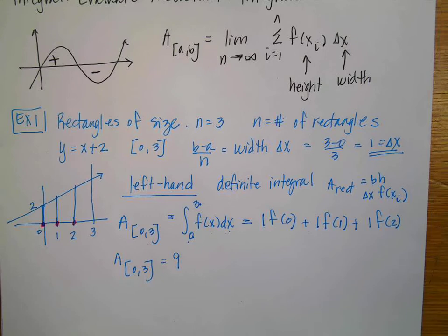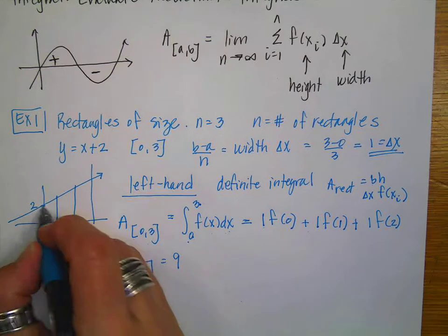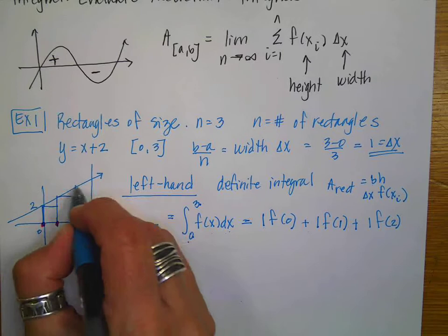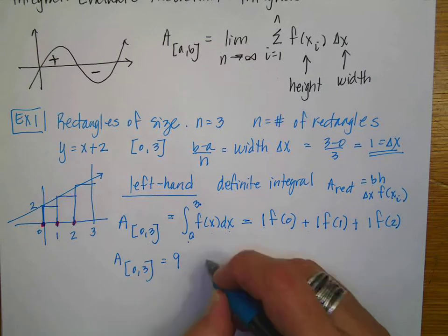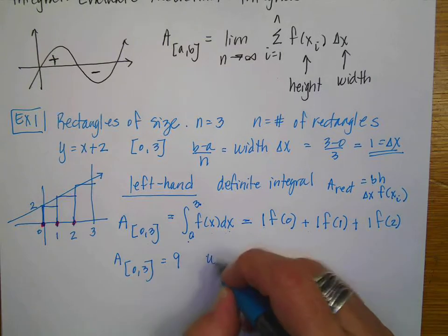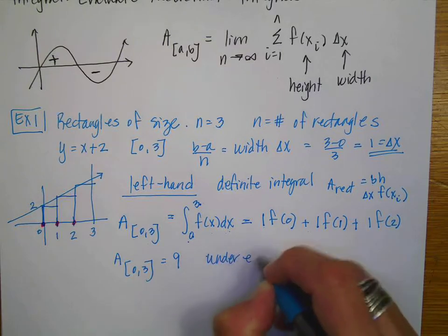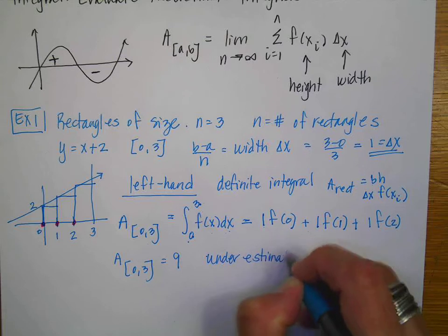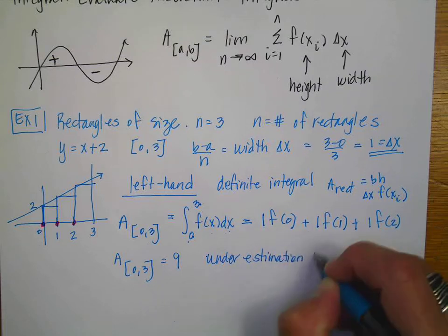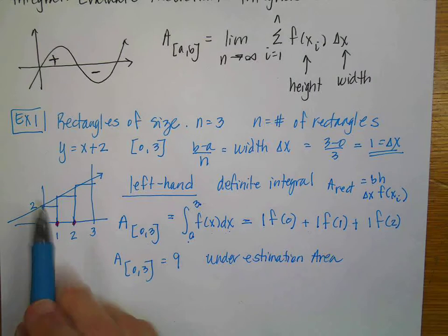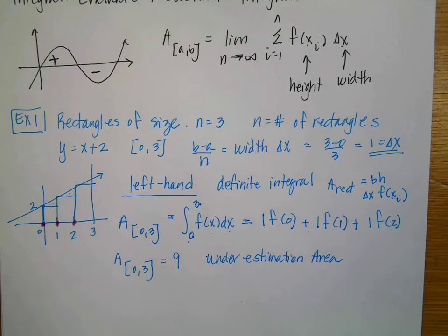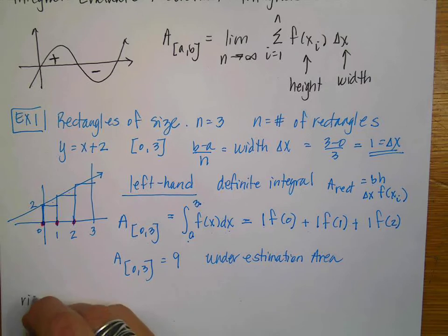This is an underestimation of the actual area, because there's a little bit of area that's unaccounted for. So now I'm going to do the same problem again in a different color — the right-hand approximation.